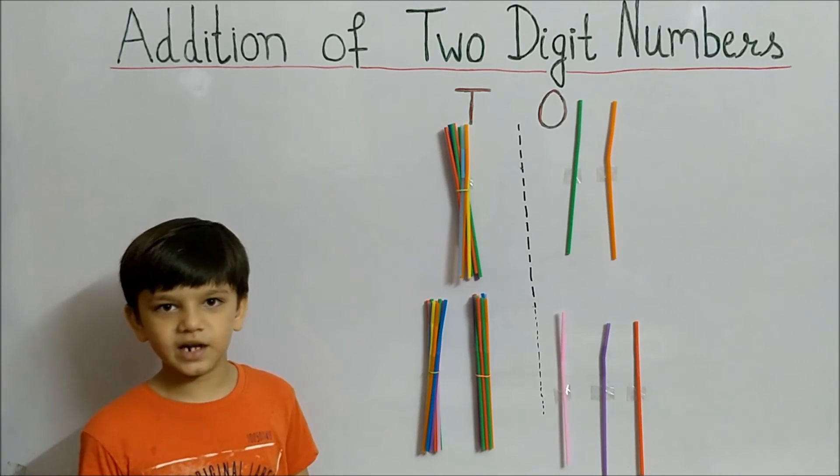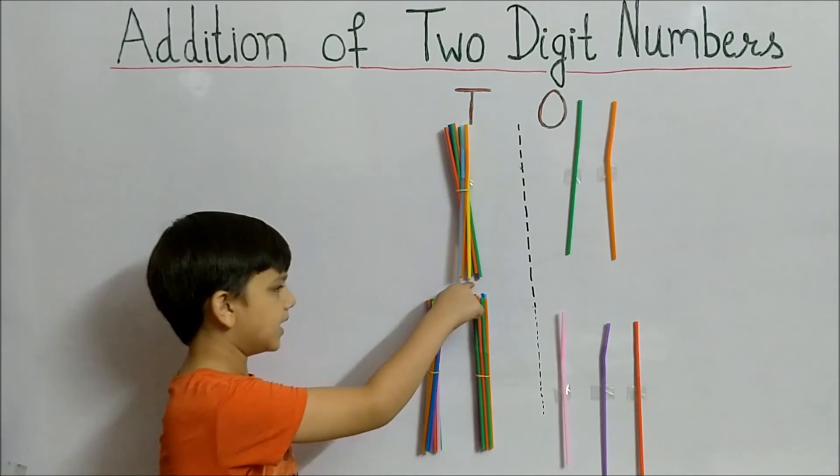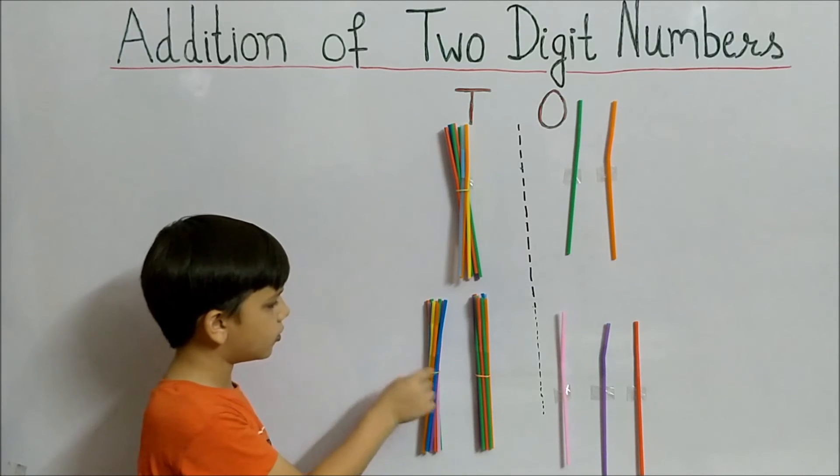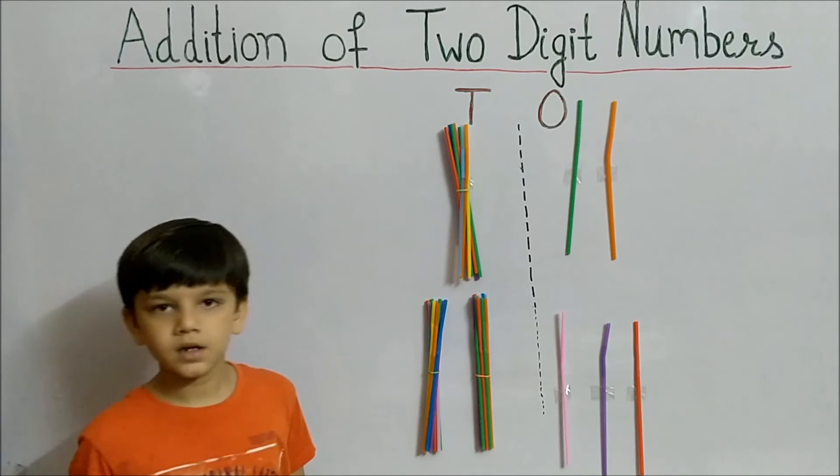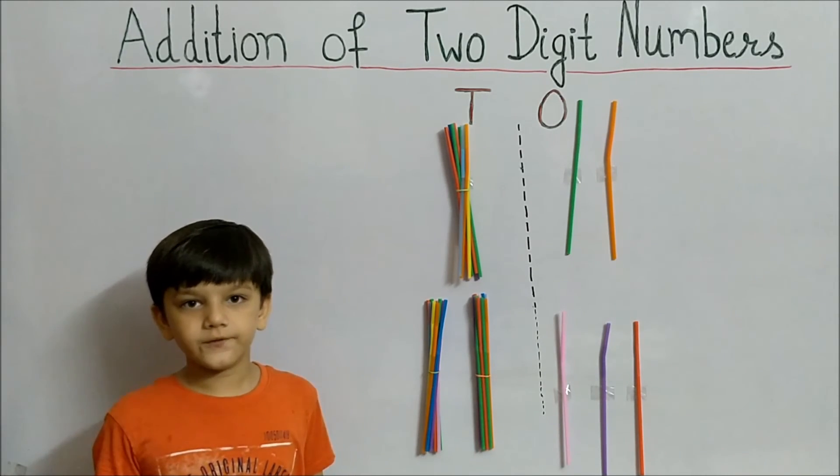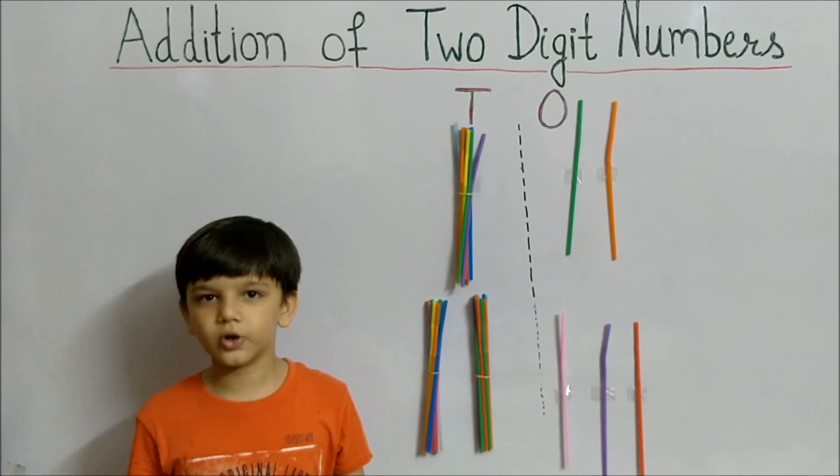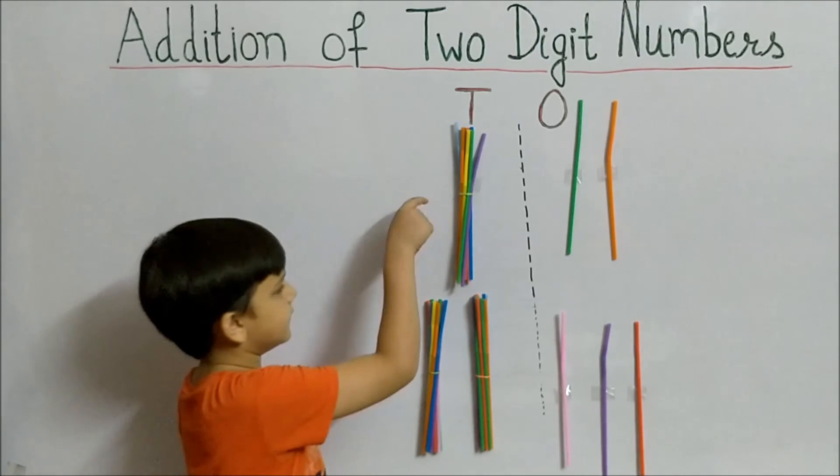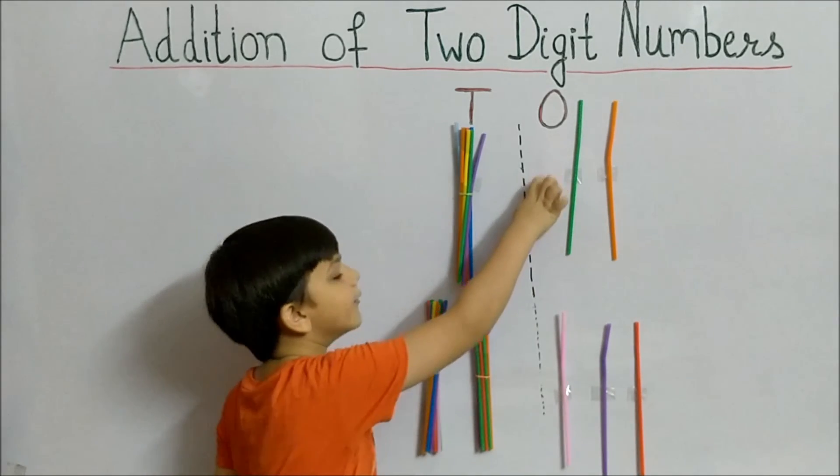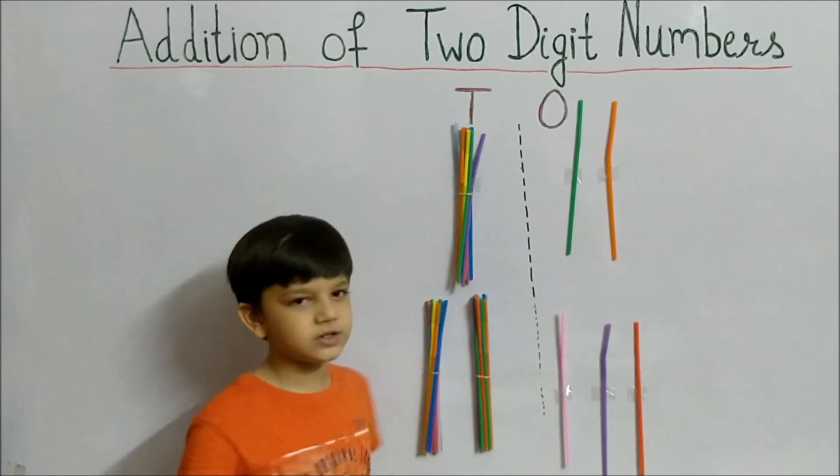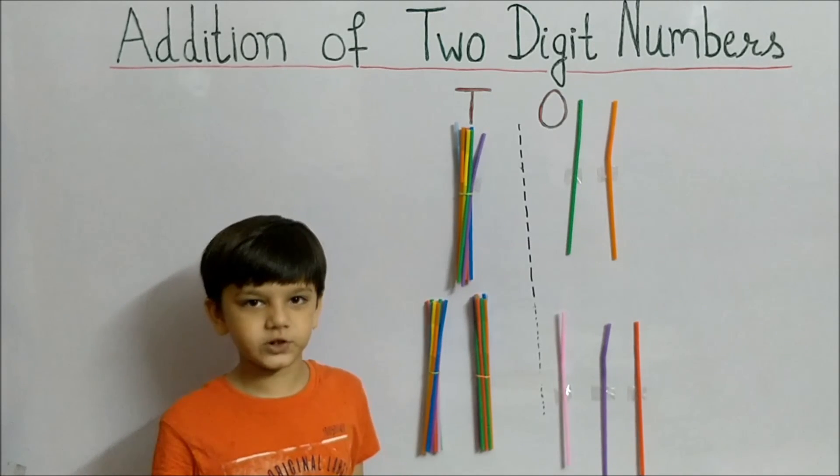Now let's count bundles: 1, 2, 3. Therefore, we have 3 bundles of straws. So in total, we have 3 tens and 5 ones, which means 35 straws.